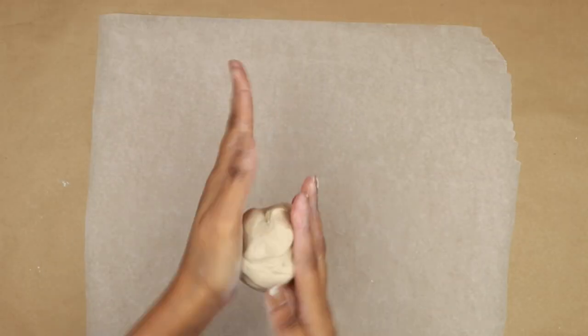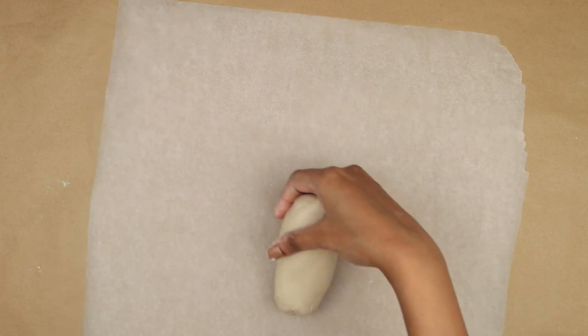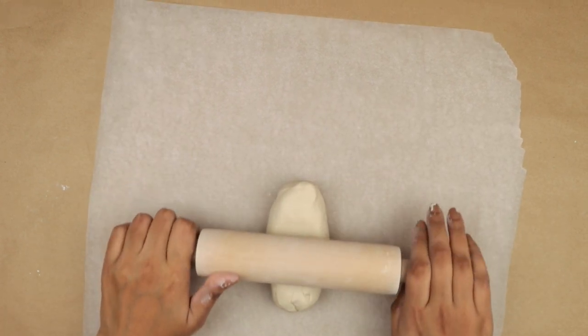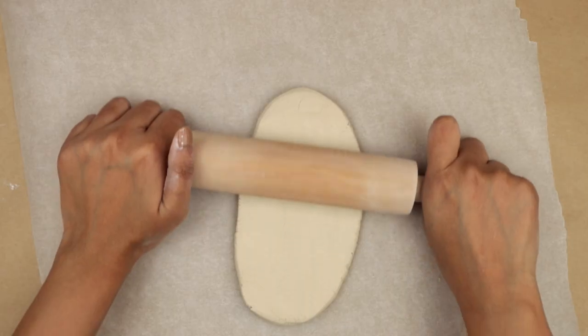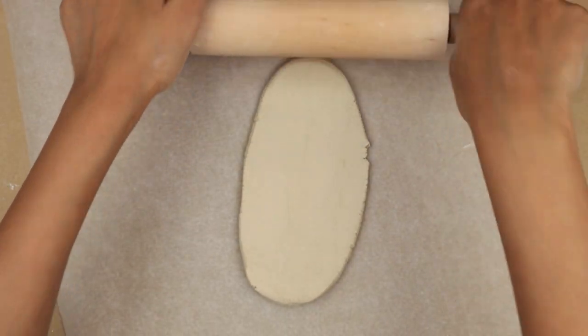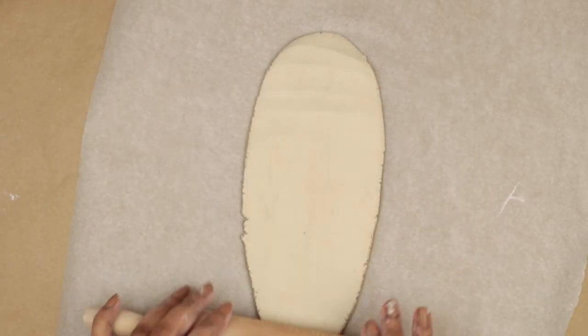To make our planter, I am taking a large chunk of air dry clay and I am going to warm it up with the palm of my hands to make it more malleable. I will mold it into an oval shape that kind of looks like a hot dog and then I am going to roll it out with my rolling pin. I will roll it until it reaches around a quarter inch thickness.